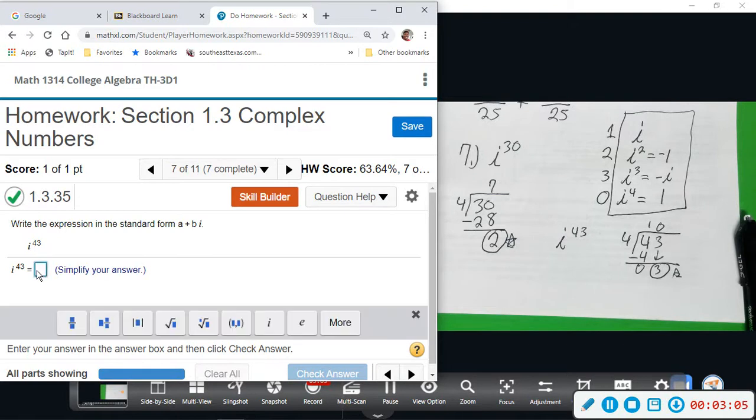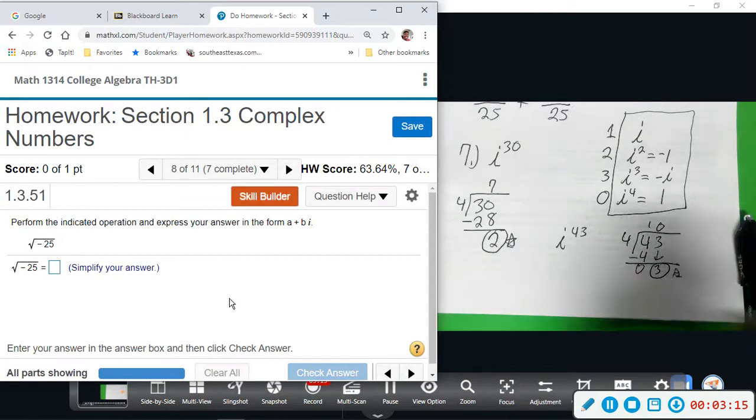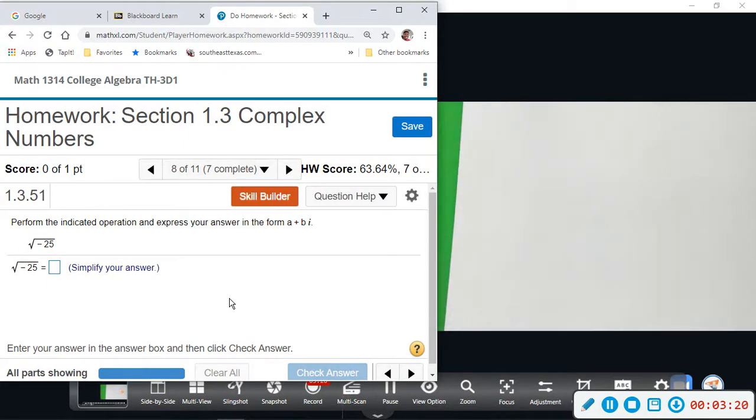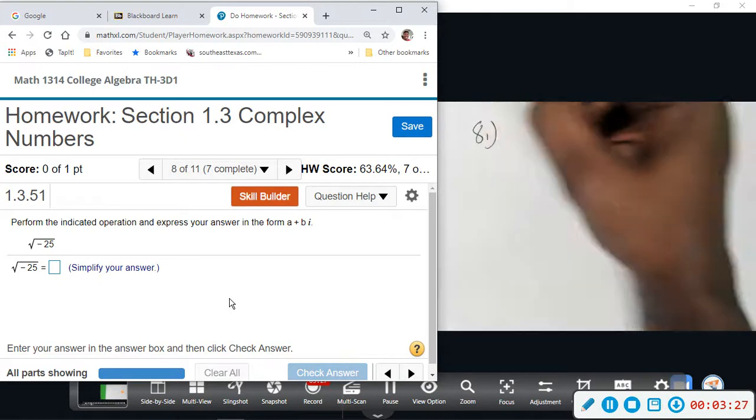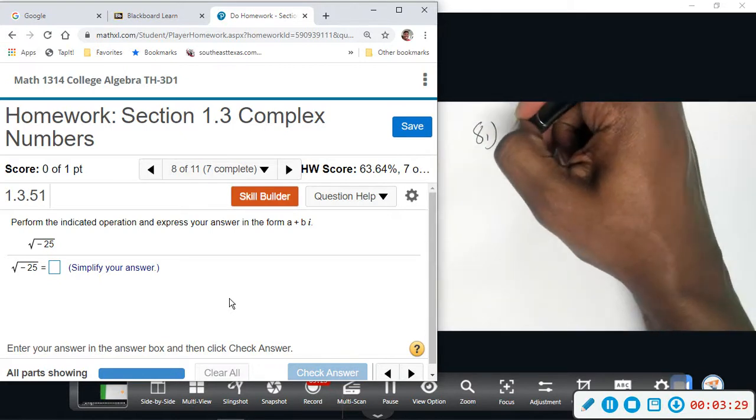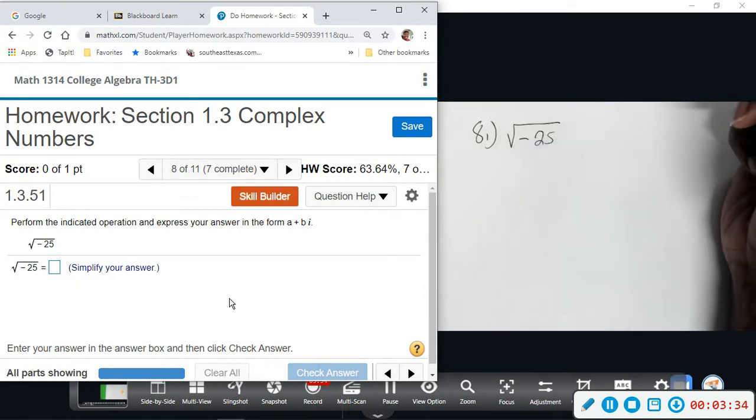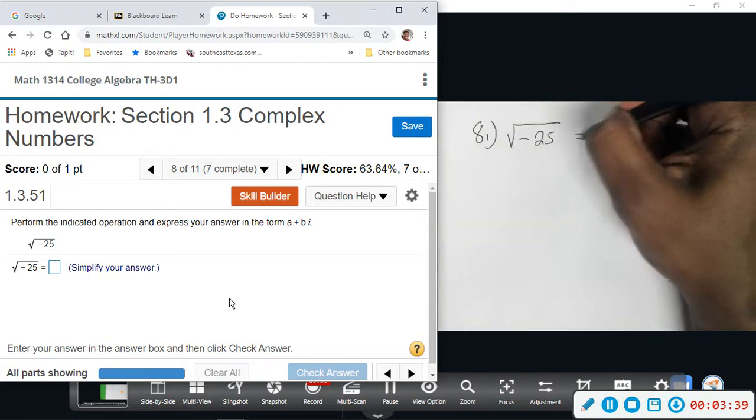So let's look at number eight. Number eight just wants us to perform the indicated operation. We have square root of negative 25. So remember, negative under square root translates to i. So we pull out that negative and it's i times the square root of 25 now.